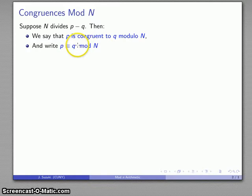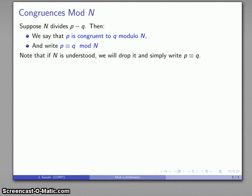The mod n phrase applies to the entire statement p ≡ q. It doesn't apply only to q; it's more like a footnote to the entire expression. If the modulus n is understood—if we know which modulus we're working with—then we generally just drop it and simply write p ≡ q without writing mod n explicitly.